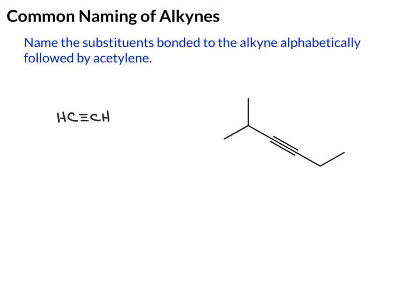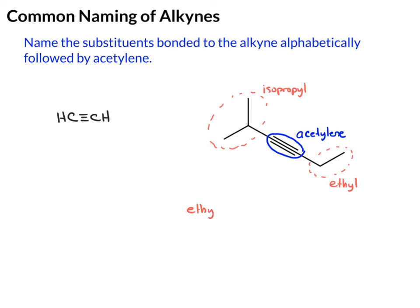So if we look at our example structure, here's the alkyne portion — that's the acetylene. Then you want to identify substituents attached to it. Here we have an isopropyl group and here we have an ethyl group. So now we alphabetize those: E comes first, we have ethyl, then isopropyl, then acetylene. Generally with common names you do leave spaces between those terms.